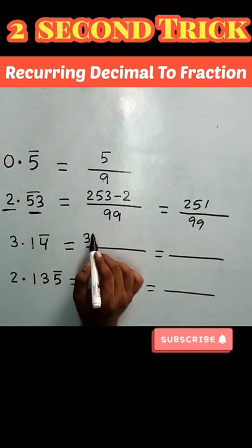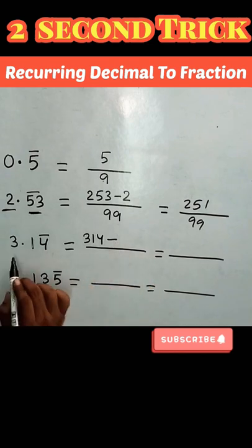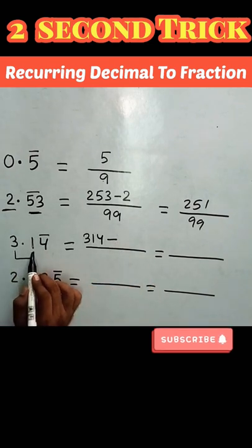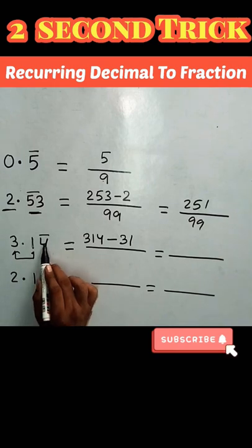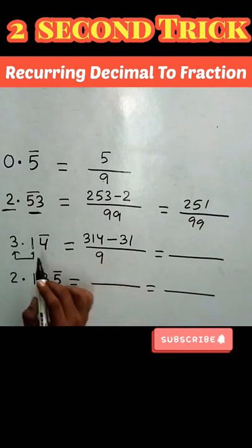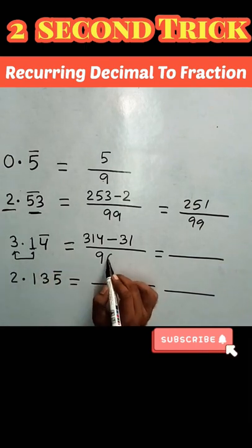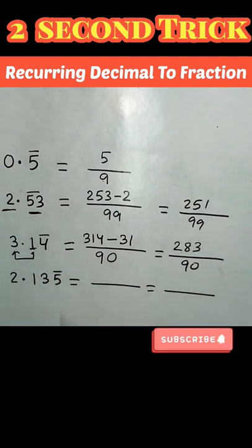Here again, I will write all the digits minus the digits which don't have a bar—that is 31. Now since one digit has a bar, that is 4, so I will write here 1 times 9. After the decimal, there is only one digit that doesn't have any bar, so I will write here 10. So the answer is 283 by 90.